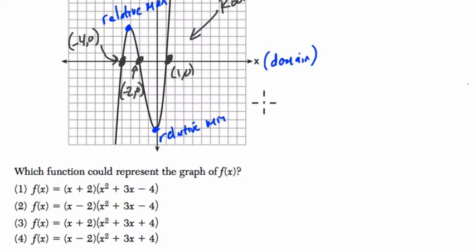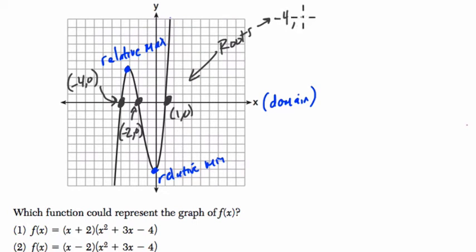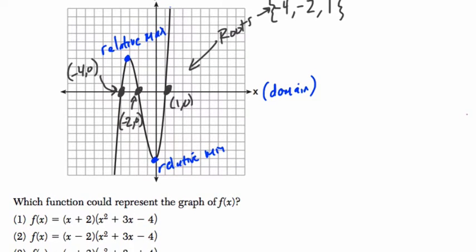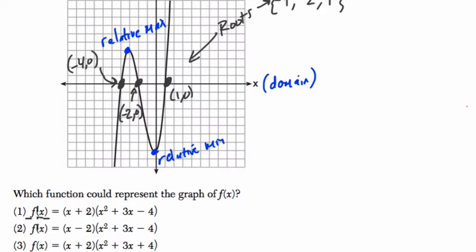So our roots are, write this down, negative 4, negative 2, and 1. Okay, so the idea is that in these equations, you want to figure out which equation has these three roots. Now, the key idea is that the height of the graph is 0 at the roots. So f of x, which is the height of the graph or the output, is 0. So let's just look at the first example.